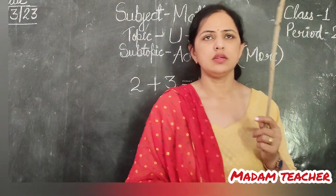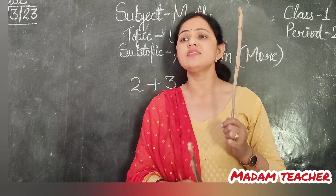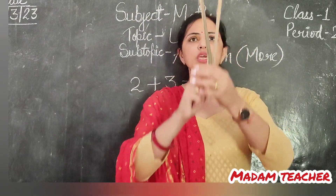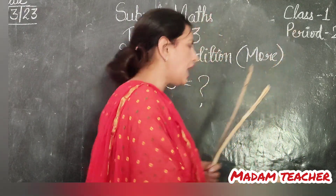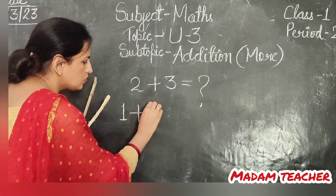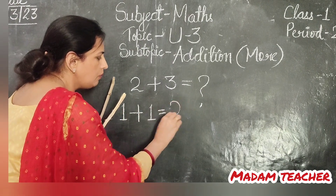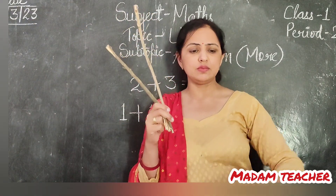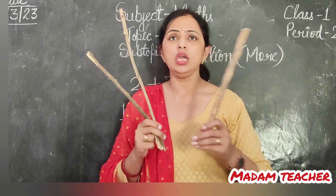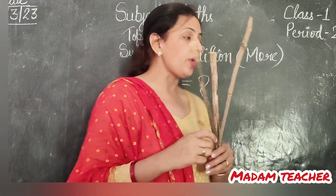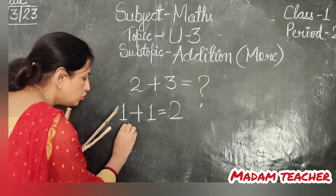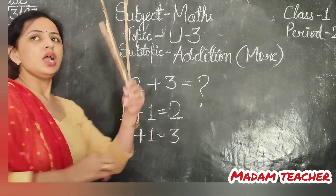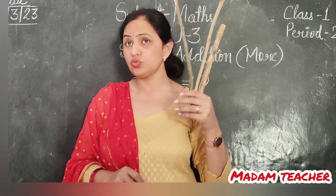There was a stick. Boy ke paas kitni sticks thi? 1. Usne ek aur neeche se pick ki — 1 aur 1 milake ho gaya 2. That means, 1 plus 1 will become 2. Ab kya hua? Then again, 2 sticks — usne ek aur pick ki. So, 2 plus 1 will be 3. How many sticks I have in my hand? It's 3.